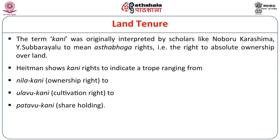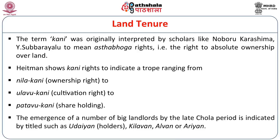There were different types of Kani rights: Nilakani (ownership right of land), Ulavukani (cultivation right of land), and Padavukani (shareholding). The emergence of large landlords by the late Chola period is indicated by several titles such as Udayan, Kilavan, Alvan, and Arayan. Based on Chola inscriptions, we can find both communal and individual ownership during the Chola period.